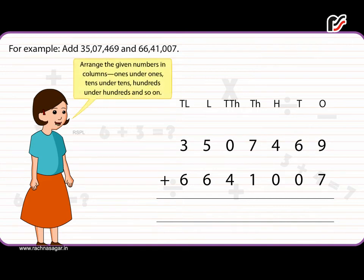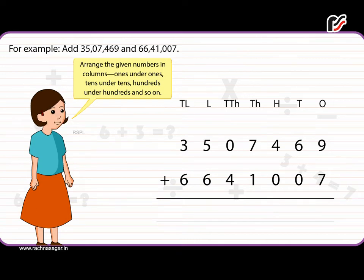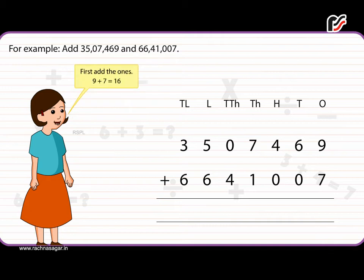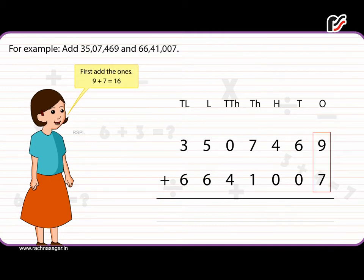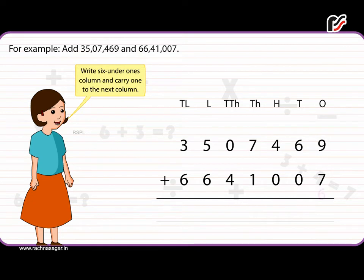Arrange the given numbers in columns — ones under ones, tens under tens, hundreds under hundreds, and so on. First, add the ones.